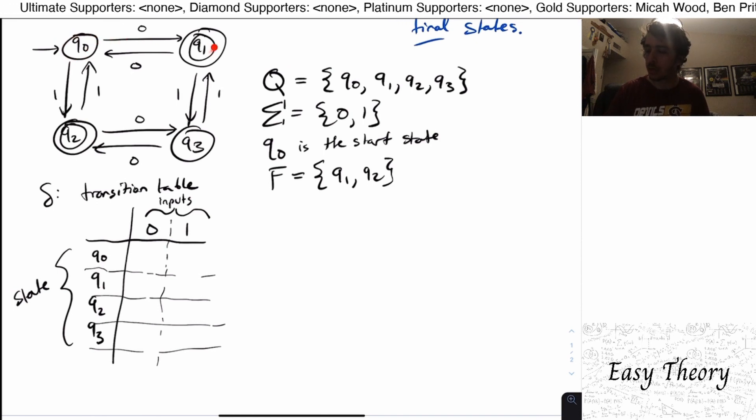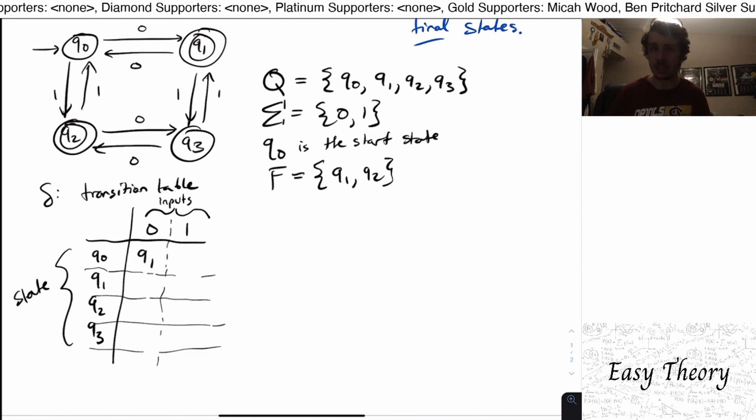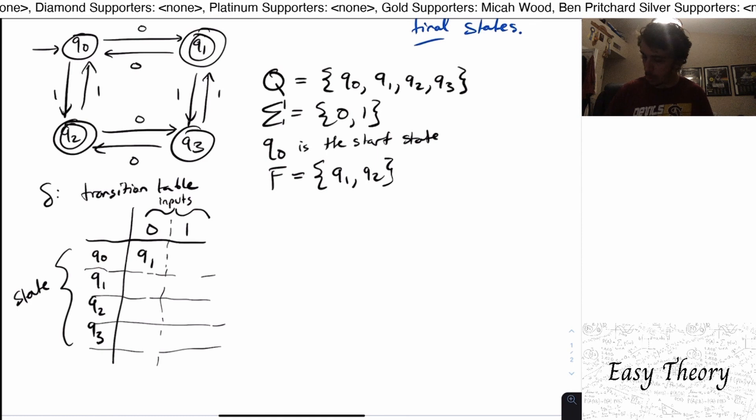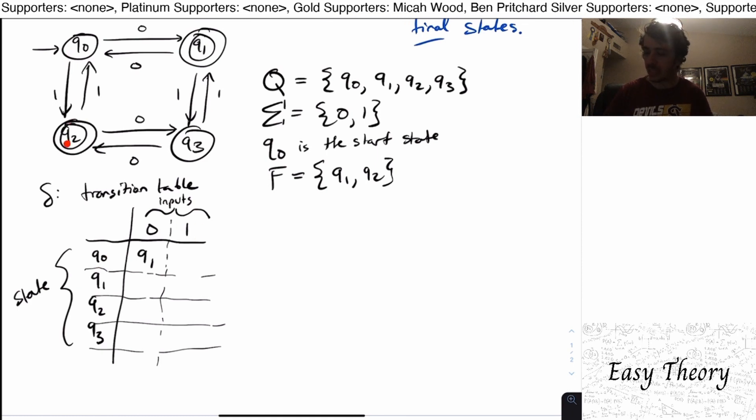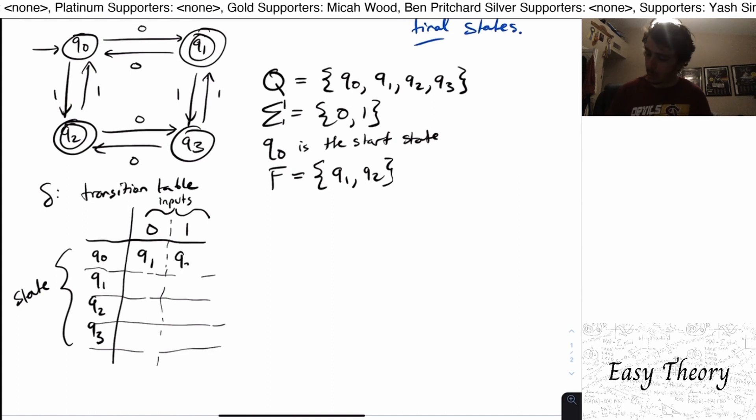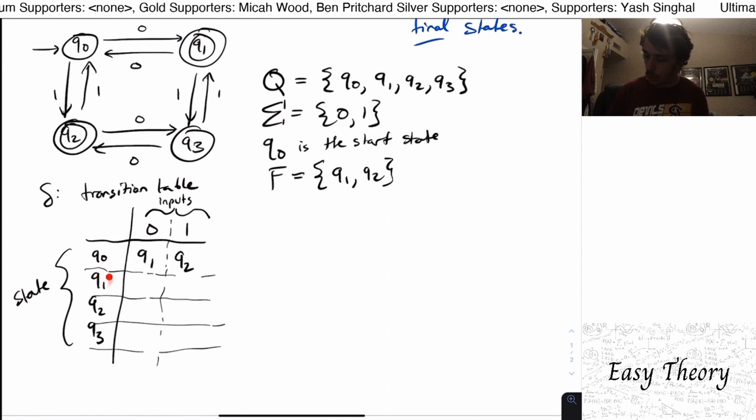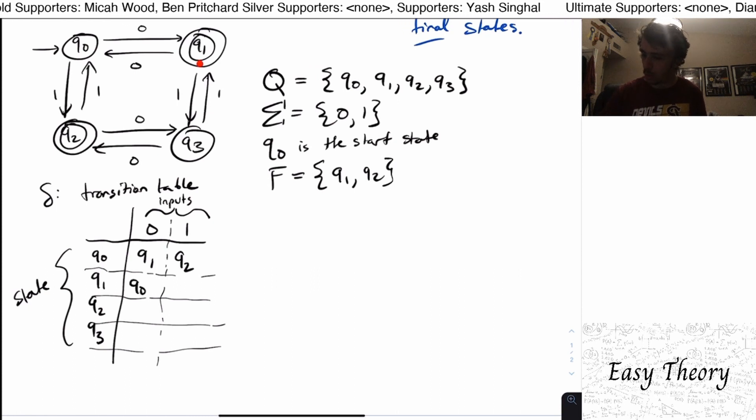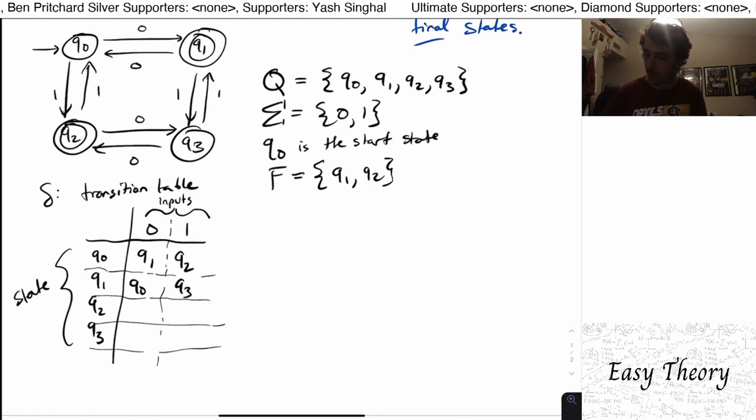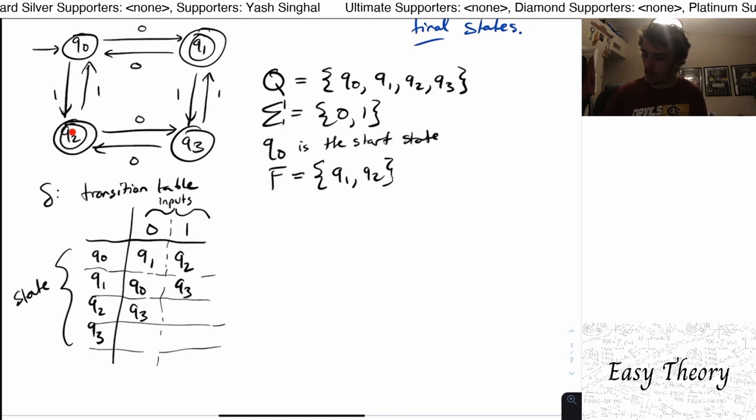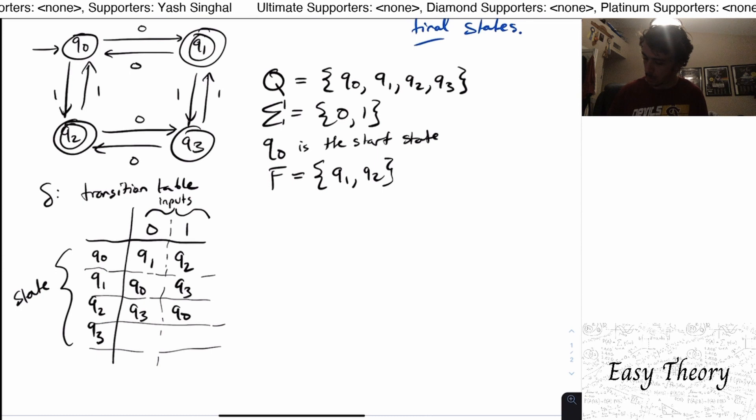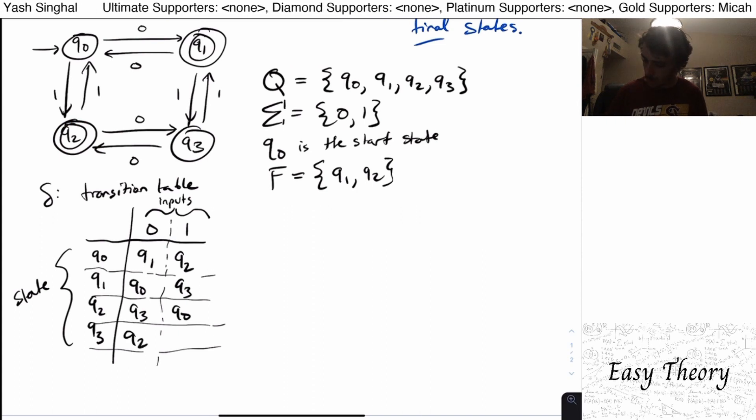So on q0, on input 0, looks like we go over to q1. So I'm going to put q1 in this position. What about q0 on input 1? Well, q0 on 1 takes us down to q2. So I put q2 in that cell. q1 on input 0, it looks like we come back to q0. On input 1, from q1, we go to q3. From q2, on input 0, we go to q3. On input 1 from q2, we go up to q0. And from q3, on input 0, we go to q2. And on input 1 from q3, we go up to q1.